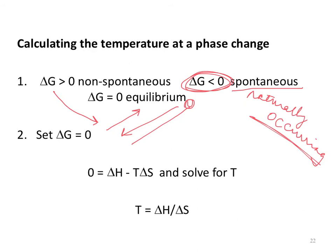If ΔG equals zero, using the Gibbs free energy relationship you can calculate the temperature at which a phase change occurs, given that temperature equals ΔH divided by ΔS.